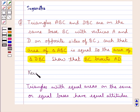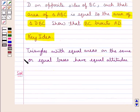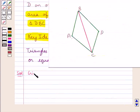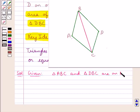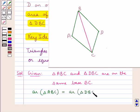This is the key idea that we use for this question. Let's proceed with the solution now. We are given that triangles ABC and DBC are on the same base BC, and we have area of triangle ABC is equal to the area of triangle DBC.